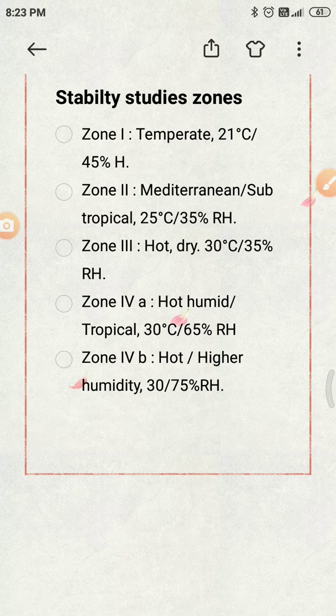What are the temperature and relative humidity conditions for each zone? Zone 1 has 21 degrees Celsius and 45 percent relative humidity as the recommended stability testing storage condition. Zone 2 is the Mediterranean or subtropical zone, where 25 degrees Celsius and 60 percent RH is the long-term stability testing recommended storage condition.